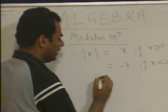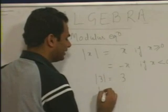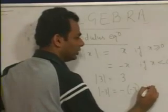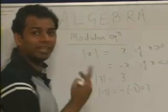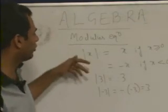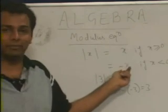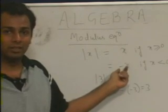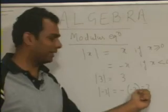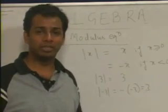If I say mod of 3, that is always equal to 3. Even mod of minus 3 is basically minus of minus 3, which is equal to 3. Mod of any number is always positive. Students who are not from an engineering background ask how mod of x can be negative — mod of minus 3 is actually 3, written as minus of minus 3, which equals 3.